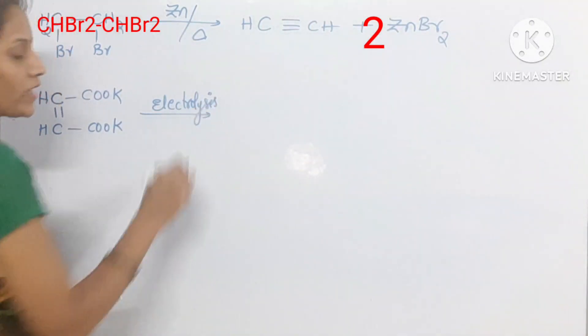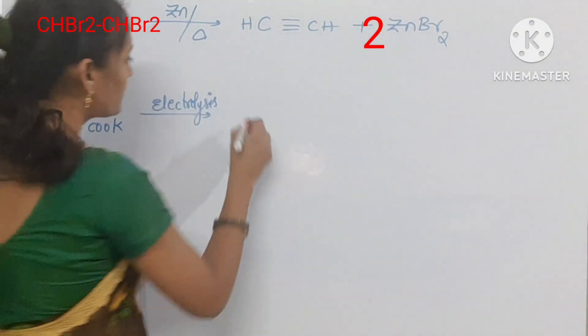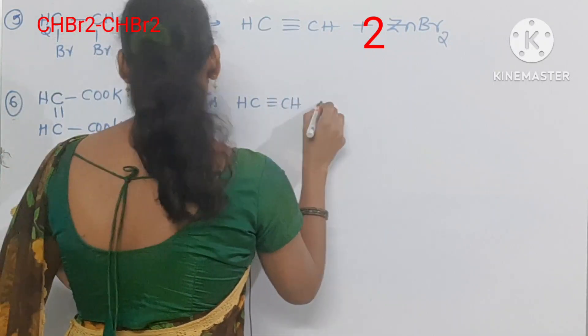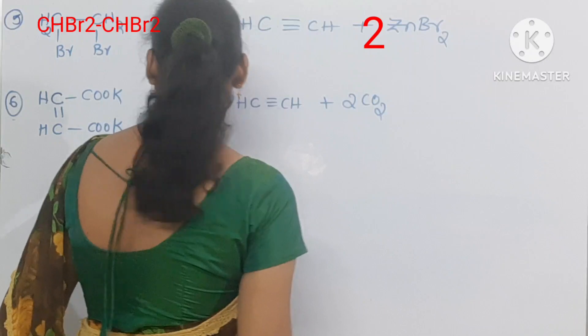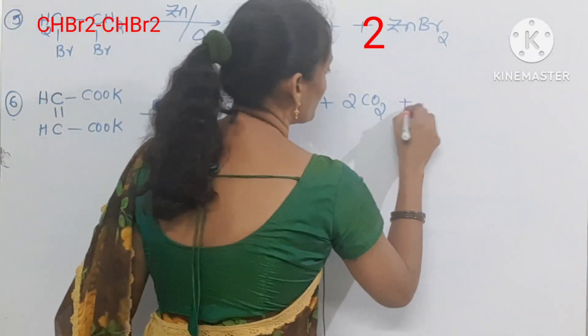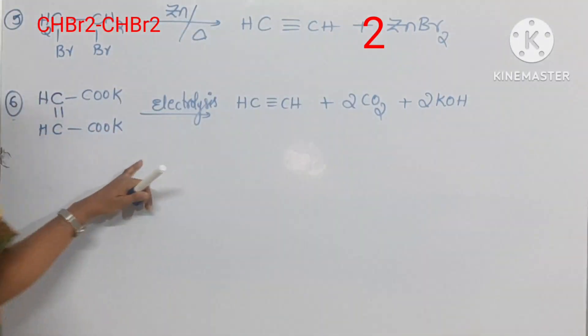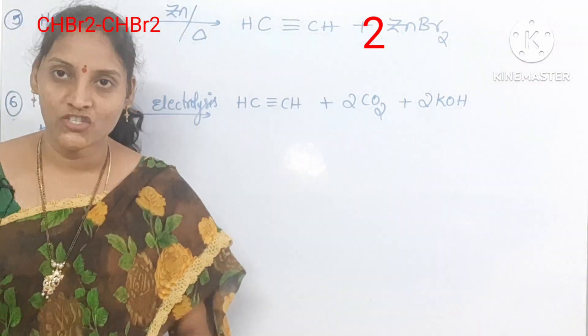It is electrolysis and then you will get acetylene CH triple bond CH. Two moles of CO2 would be eliminated and then two moles of potassium hydroxide also eliminated. These are the preparation methods of acetylene.